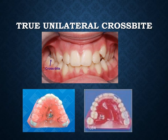In true unilateral posterior crossbite, there will be no shift in the lower dental midline to coincide with the upper dental midline during the path of closure, and there will be no deflective contact. This confirms it is a true unilateral posterior crossbite.